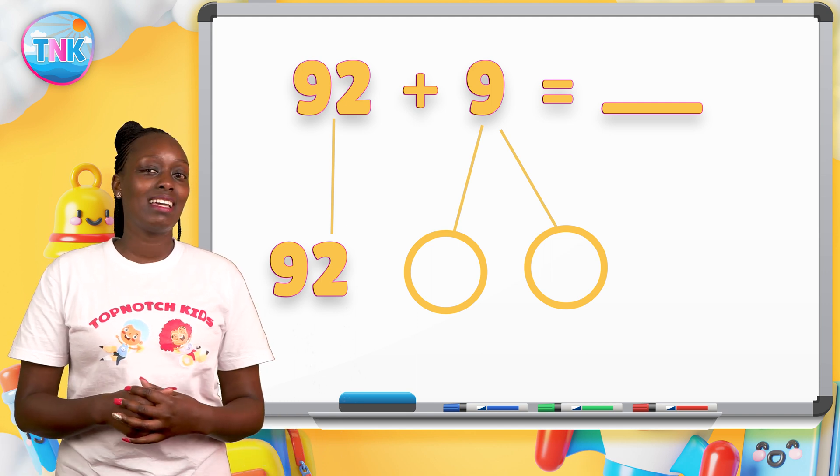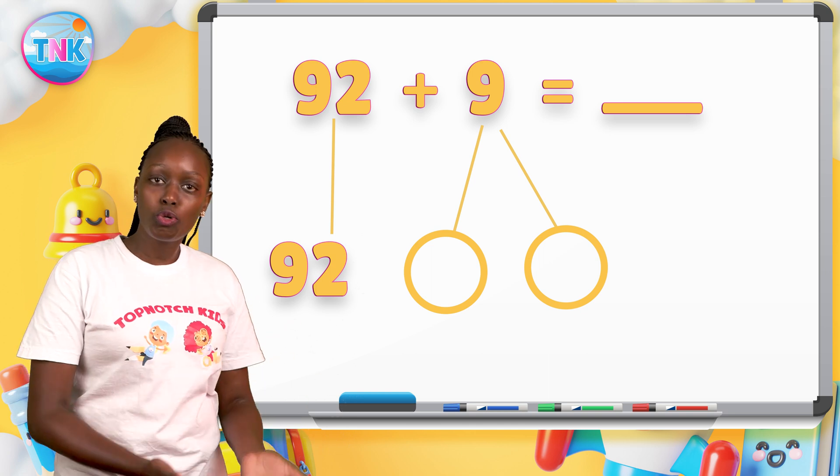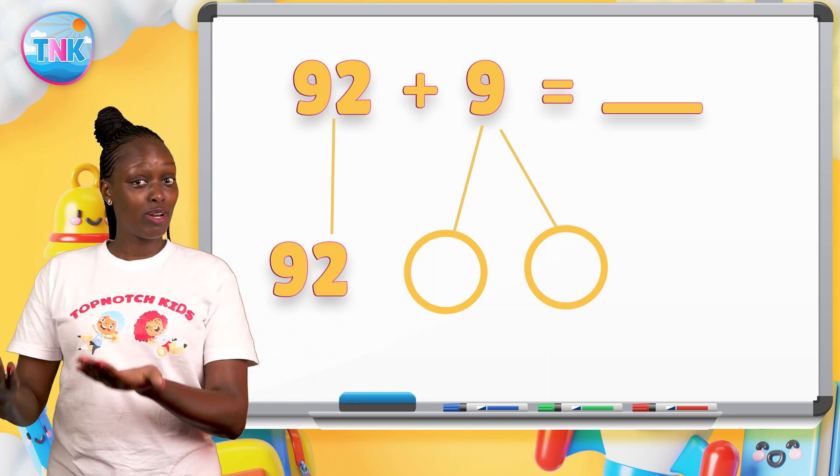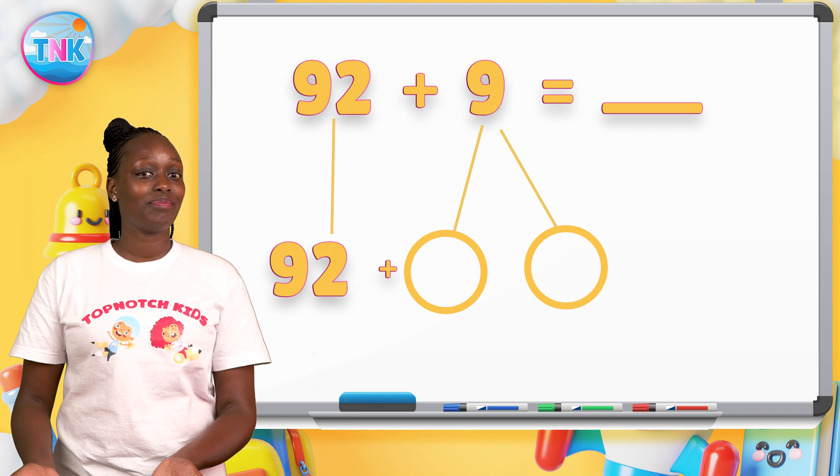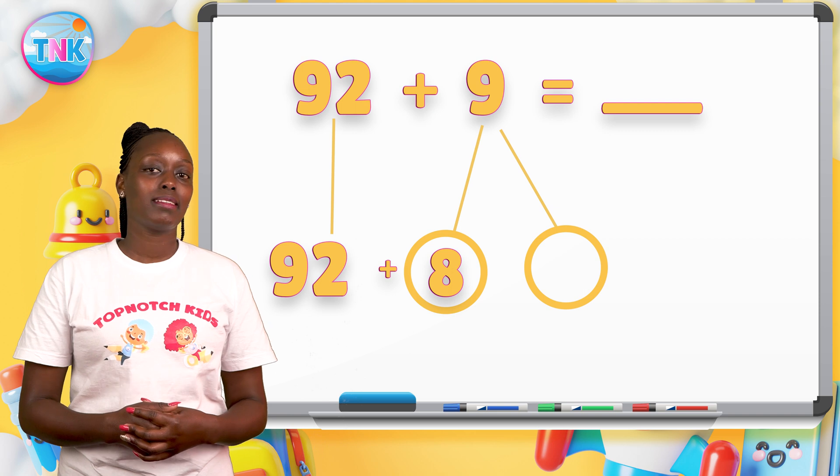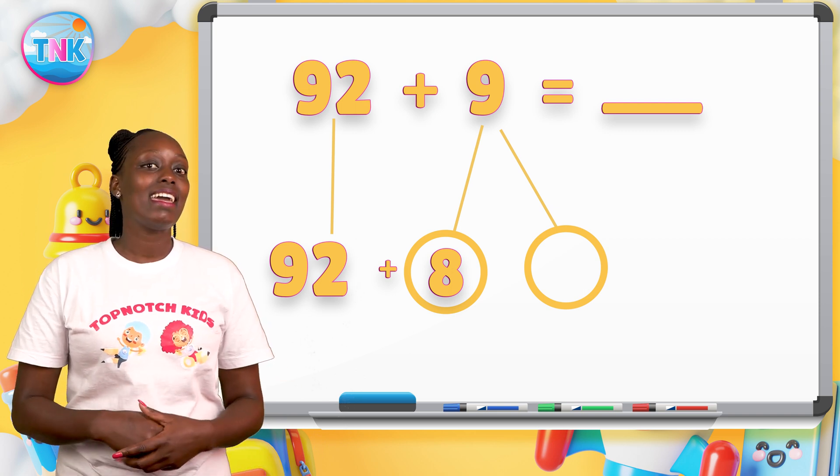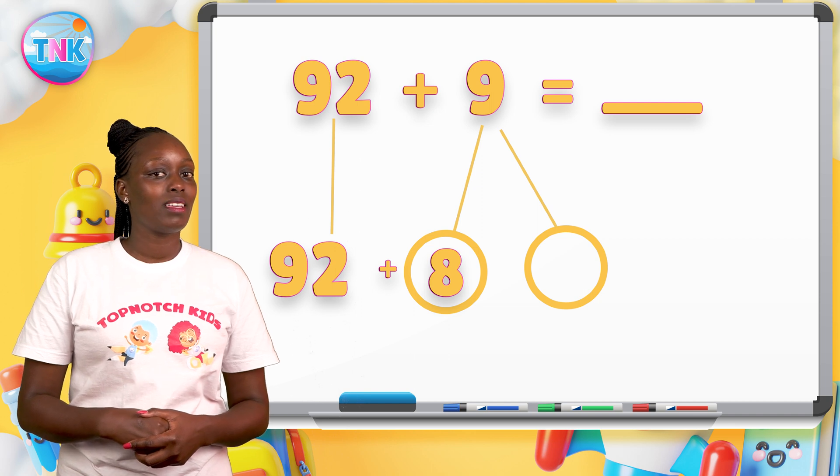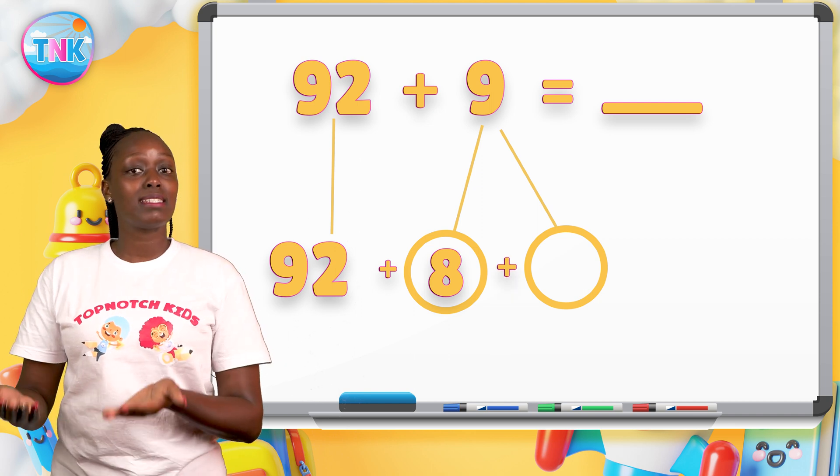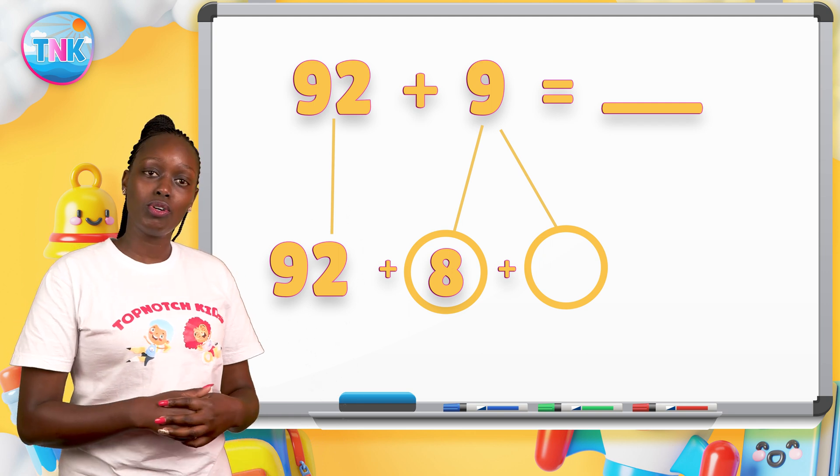Now count how many steps you will make from ninety-two to get to a hundred. Awesome! It's eight steps. On one circle, write eight.